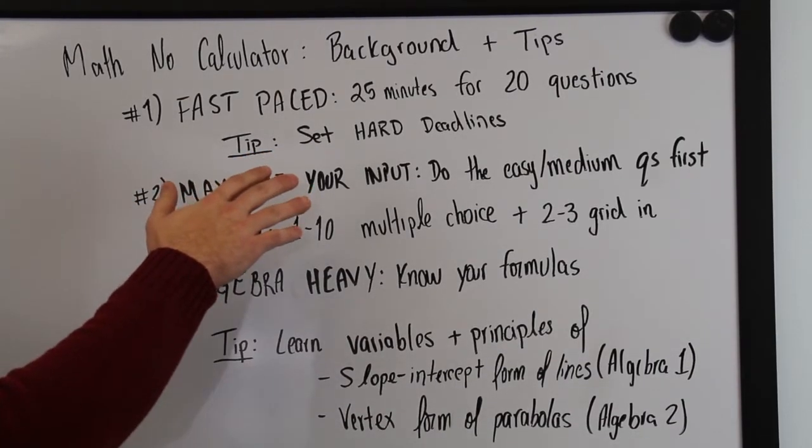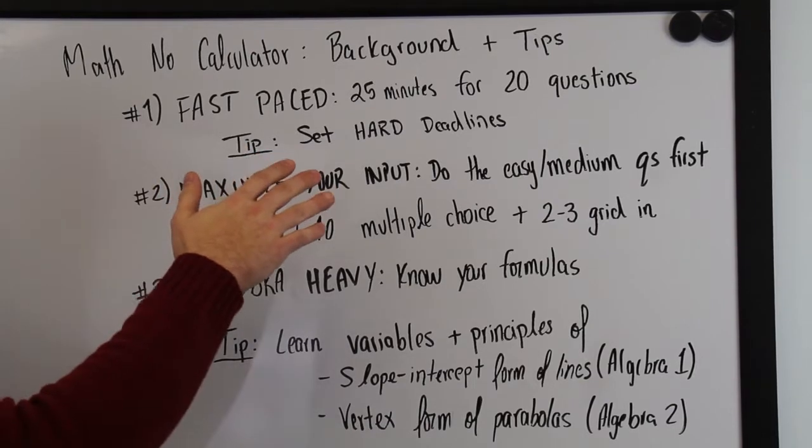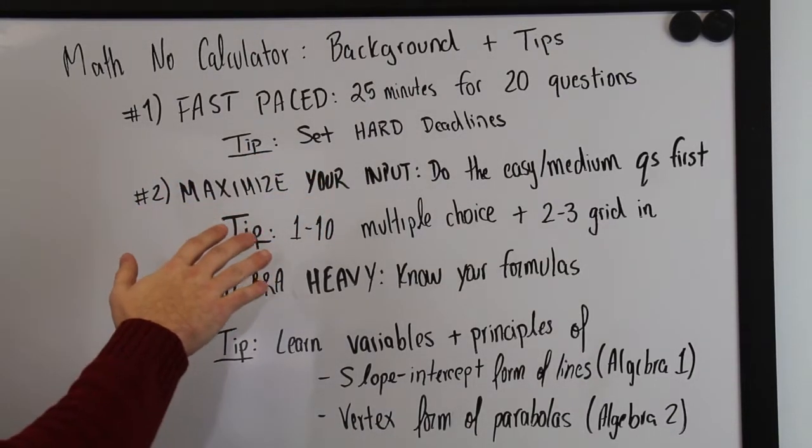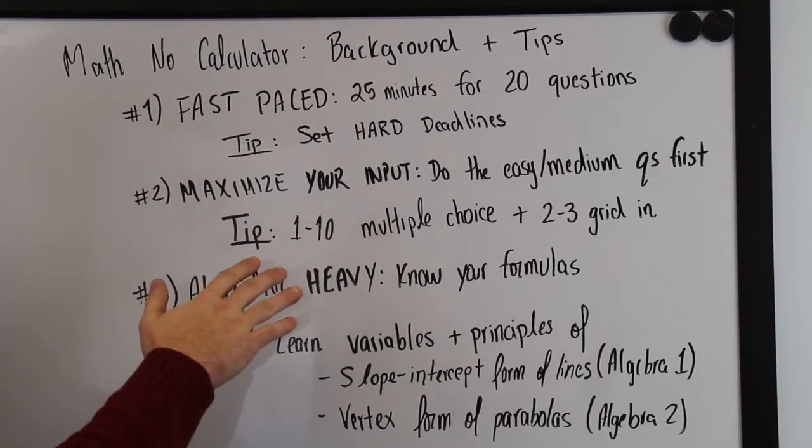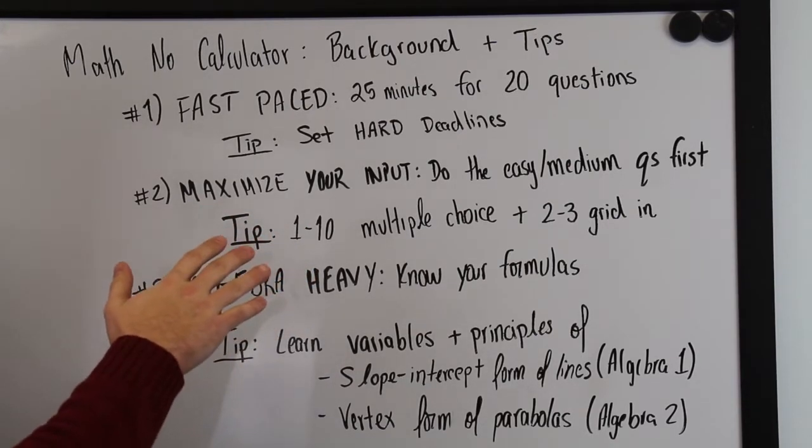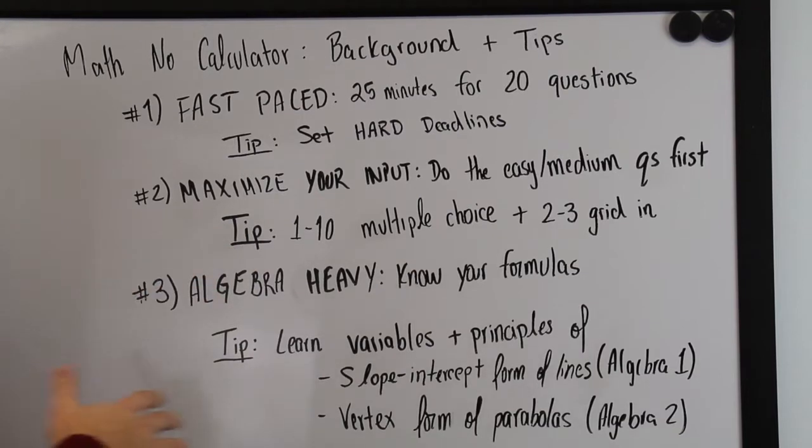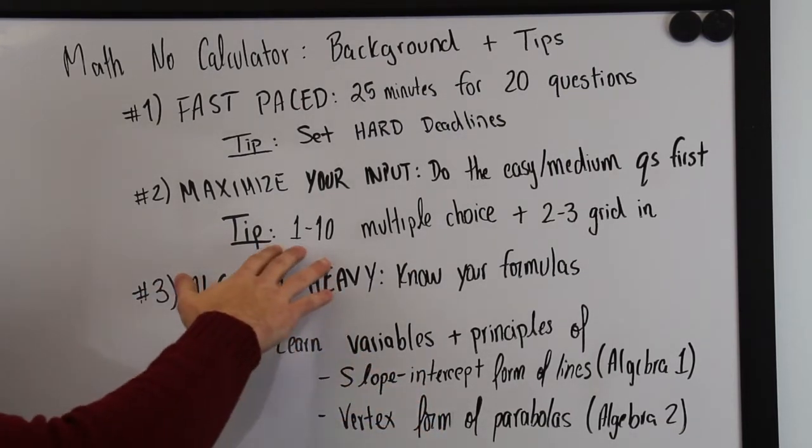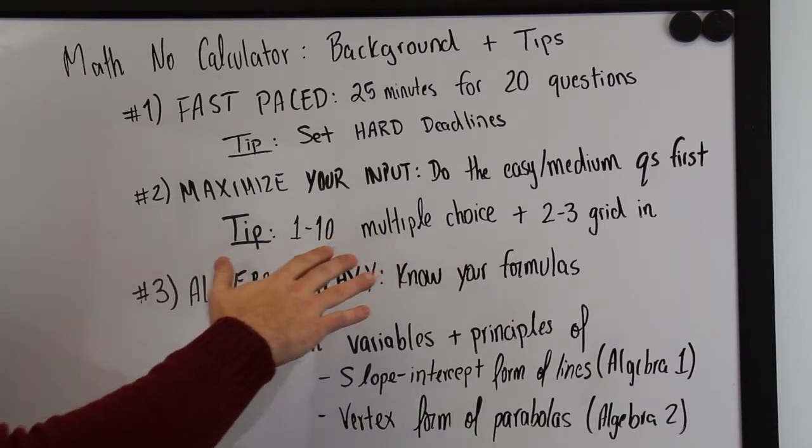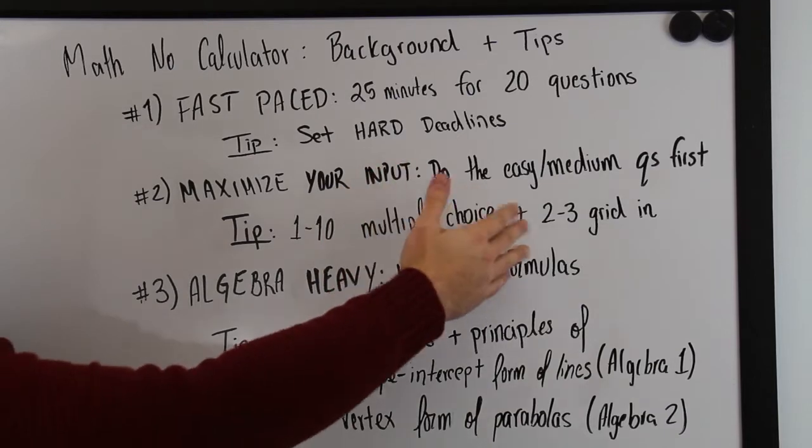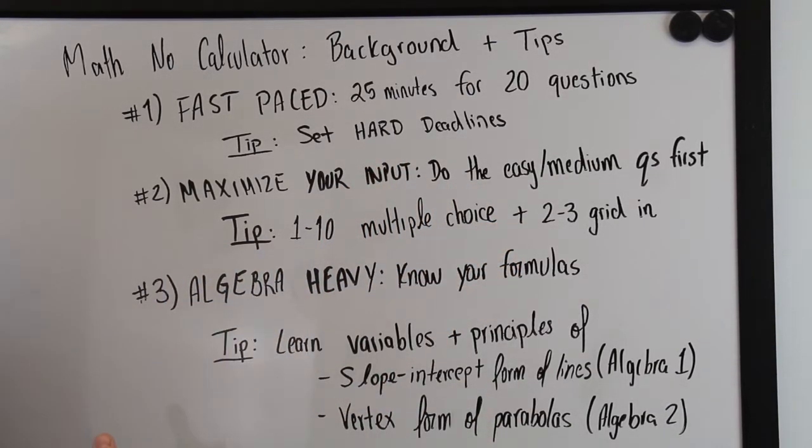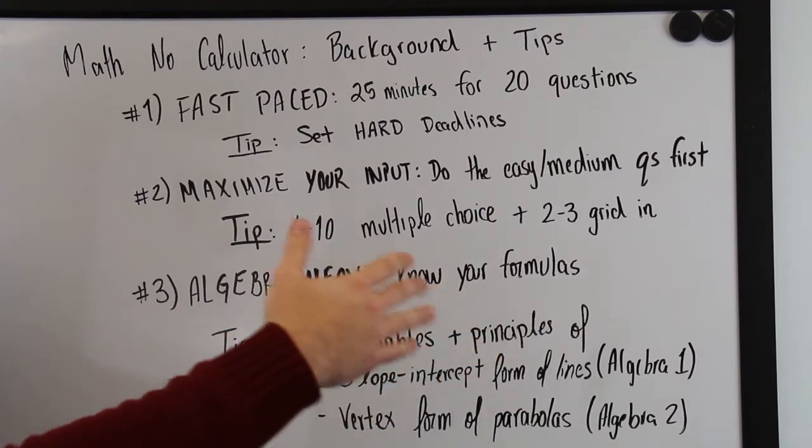So having set our hard deadlines of 75 seconds per question, the next thing that we're going to want to focus on is how can we maximize our input in this section. Because this section is organized in a way that the questions progress linearly in terms of their difficulty, the first ten questions that are multiple choice are going to be your easy to medium level questions, and then once you hit the grid in questions, the difficulty resets once again and it progresses from easy to hard once again.